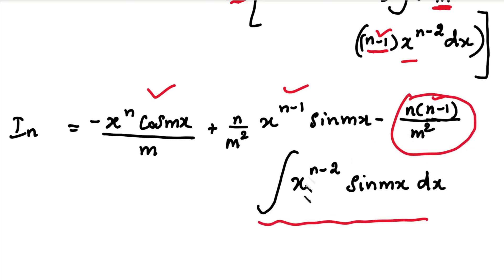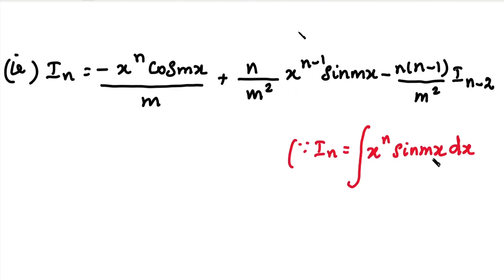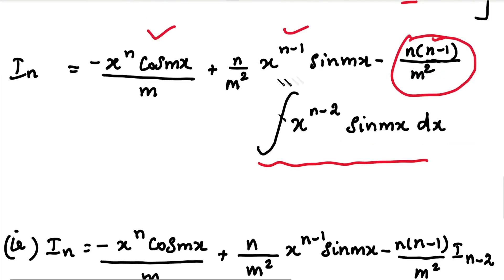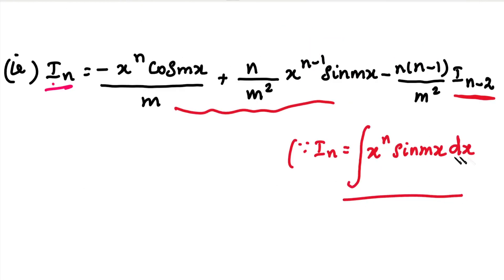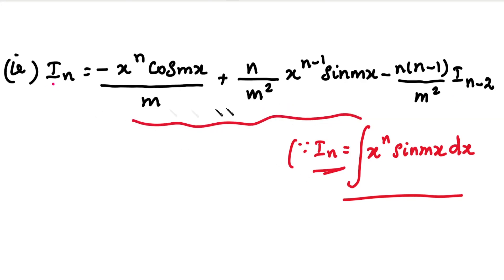So the integral of x power n into sin mx dx — this is I suffix n — gives us the reduction formula. The right-hand side expresses everything in simplified terms, completing the derivation of the reduction formula for the integral of x power n sin mx dx.